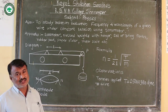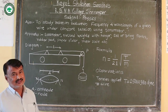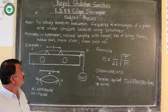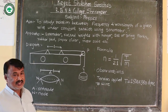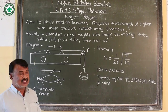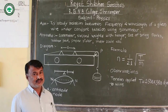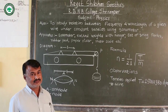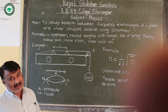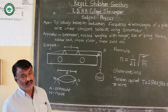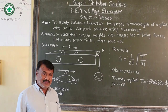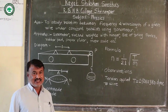The apparatus for this experiment are: sonometer box, slotted weights with hanger, set of tuning forks, rubber pad, paper rider, and meter scale, etc.